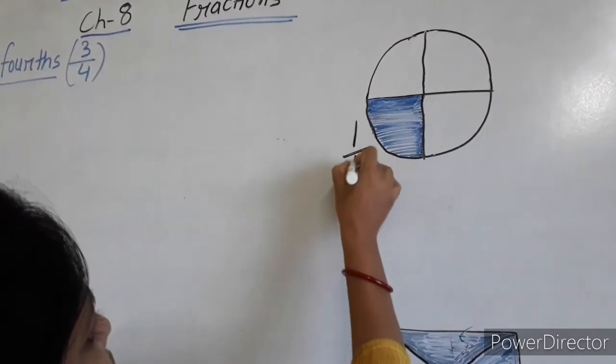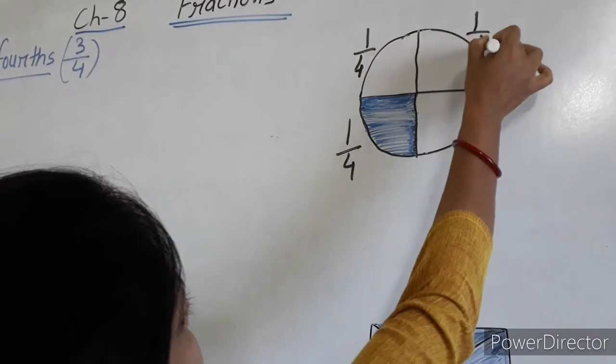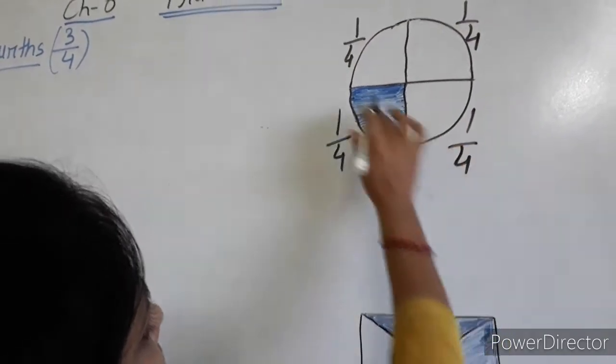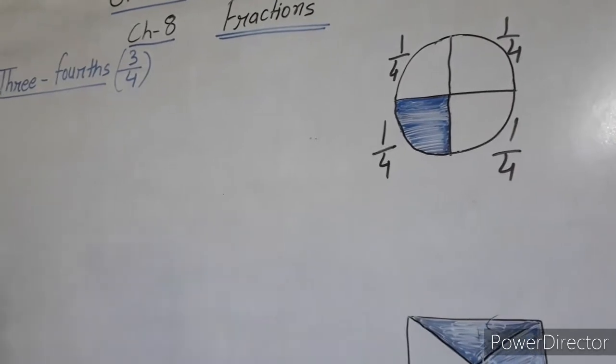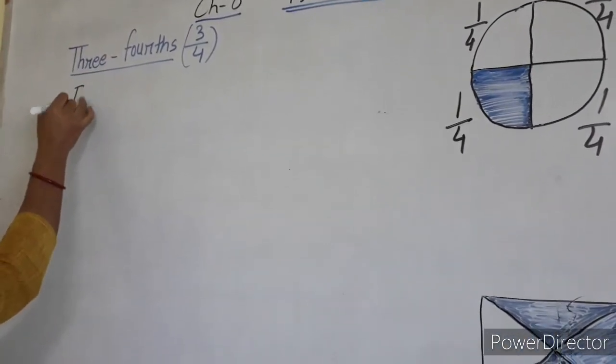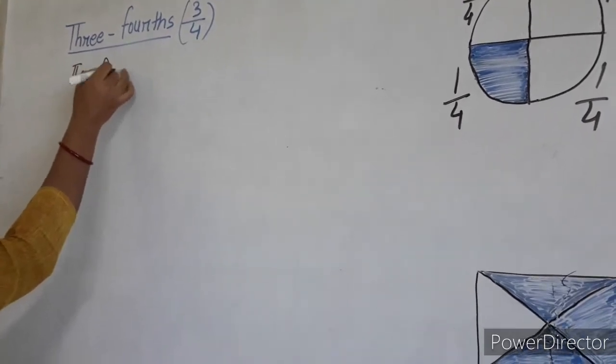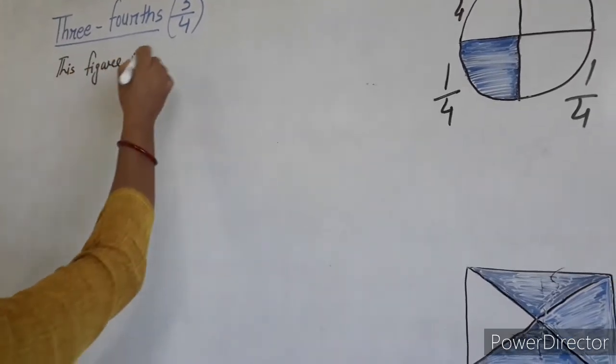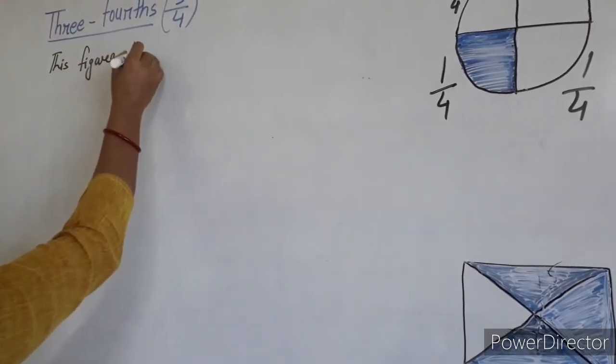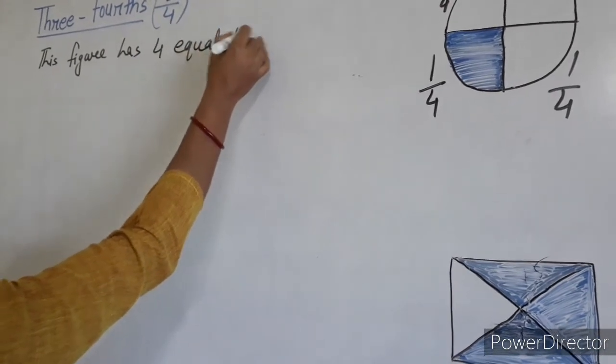So just you can write here. This is 1 fourth, 1 fourth, 1 fourth and 1 fourth. Four equal parts. So just write here it has 4 equal parts.